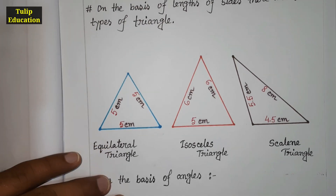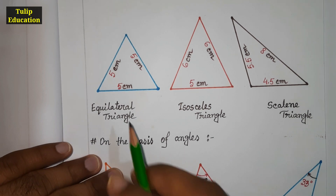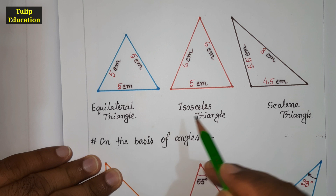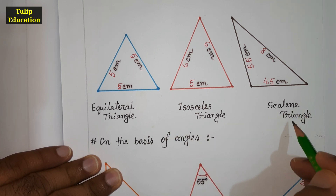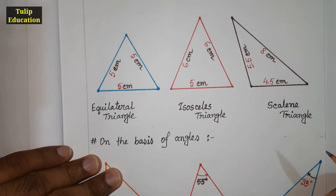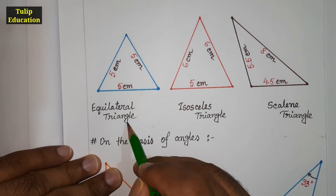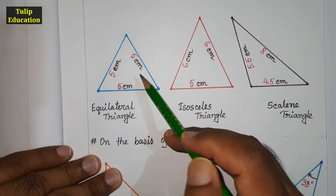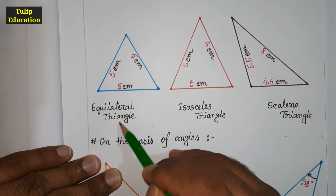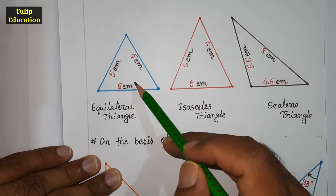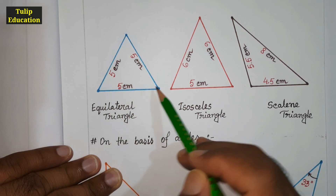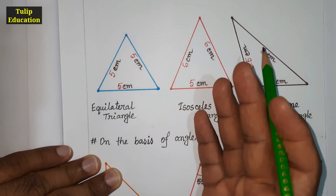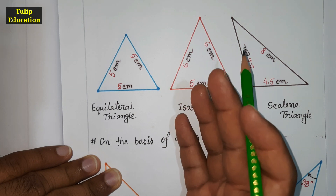You can see I have drawn the three types of triangle. The first triangle is the equilateral triangle. What is an equilateral triangle? The triangle whose all three sides are equal in length is an equilateral triangle. You can see the three sides are five centimeters in length — it may be six centimeters, seven centimeters, or 7.5 centimeters, but all three sides should be equal in length.